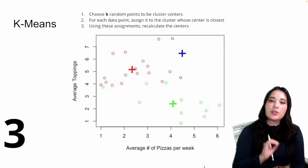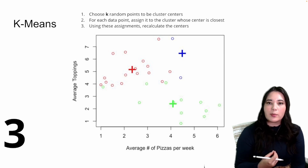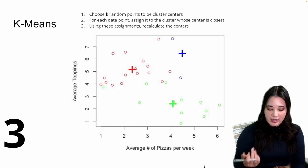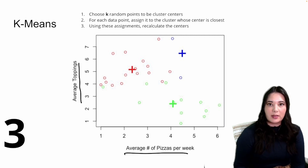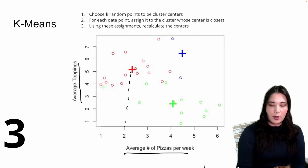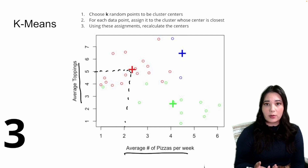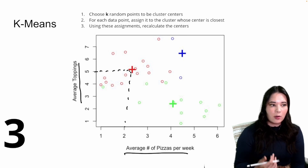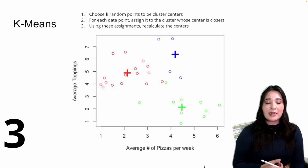Now that we have data points assigned to a cluster, we update where the centers of those clusters are — since we now have actual members, we can come up with a better center. We do that by taking the mean for each cluster of all predictor variables. In this example we're clustering on average number of pizzas eaten per week and average number of toppings. We move the cluster center to the mean values for that cluster. Then we reassign data points to the closest new center.